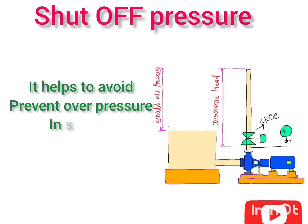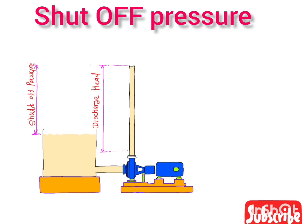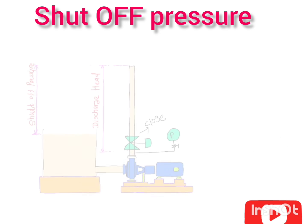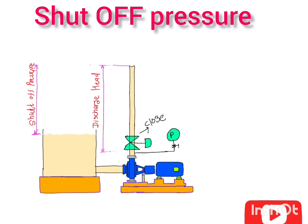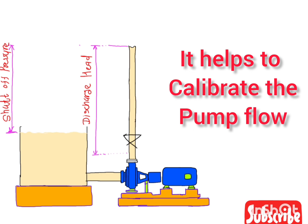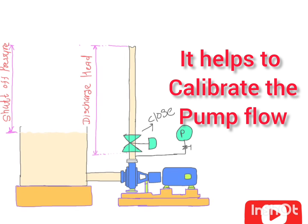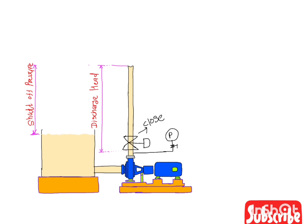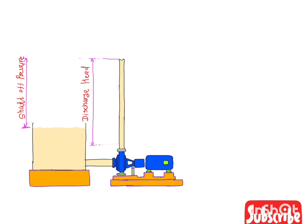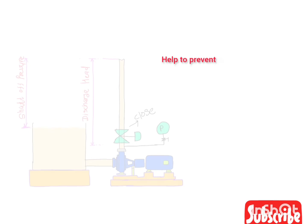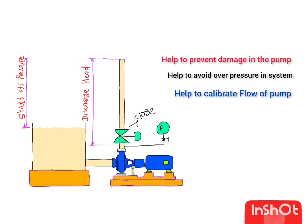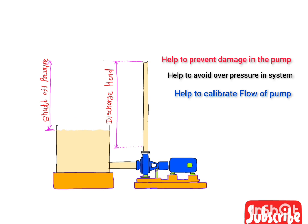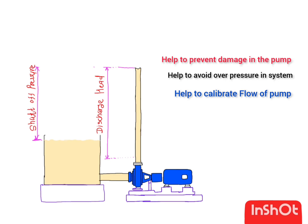The third benefit is that shut-off pressure helps in systems that require precise flow control, such as chemical processing or water treatment. It is used to calibrate the pump and ensure it delivers the desired flow rate at a given pressure. So the three main benefits are: preventing pump damage, preventing overpressure, and ensuring accurate flow.